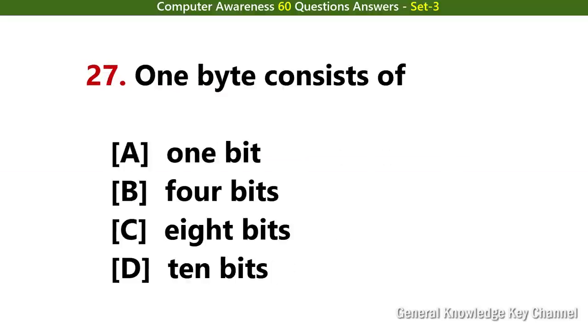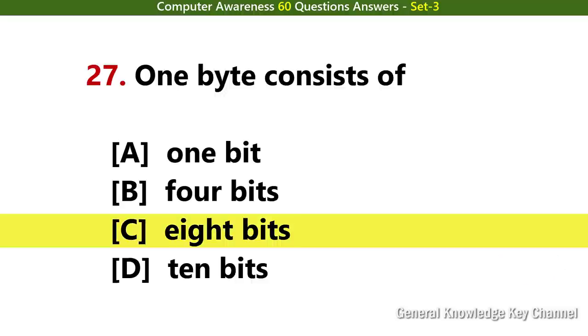One byte consists of? Answer option C: 8 bits.